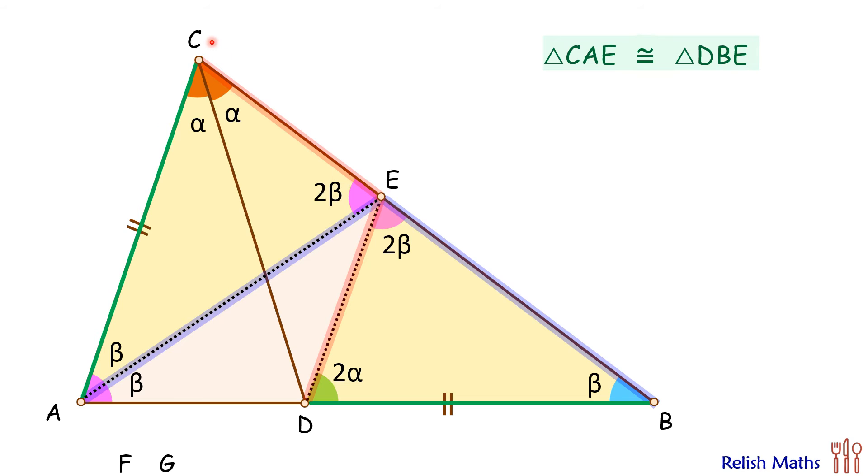Now here in this triangle CED, CE and ED are equal, so it's an isosceles triangle. So opposite angles, that is angle C and angle D, will be equal. So angle D here is alpha degrees.